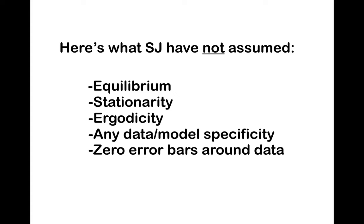To re-emphasize: here are things that Shore and Johnson have not assumed. They have not assumed any notion of equilibrium, stationarity, ergodicity, any particular structural specificity of the model or data, and they have certainly not assumed that all data should be treated on an equal footing. Data with large error bars should constrain the model less than data with small uncertainties. Shore and Johnson have also not assumed any notion of uncertainty — which earlier had been heavily criticized.